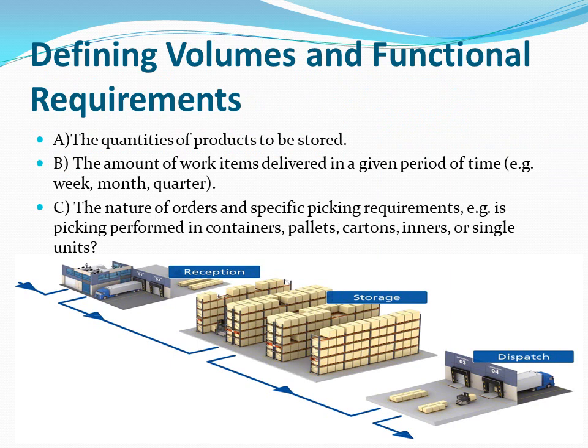After defining the objectives, we define the volume it holds and functions it performs, divided into four parts. Part a: the quantities of products to be stored. Part b: the amount of work items delivered in a given period of time — for example, week, month, or quarter — including incoming goods, customer orders, interfacility transfers, dispatches, and returns.